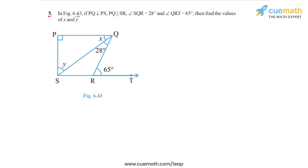Question 5 of the exercise says in this given figure 6.43, PQ is perpendicular to PS, that's why we have this symbol here. PQ is parallel to SR, so PQ is parallel to SR. Angle SQR is 28 degrees.